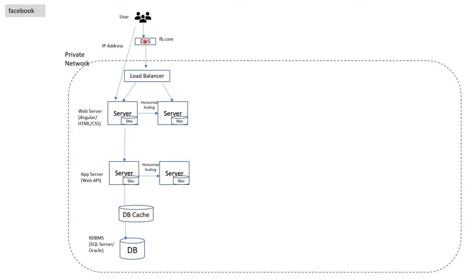The users will not access the site by IP address — they will use a domain name. In this case it is fb.com or facebook.com. For that you will use DNS right here. For a normal application and normal traffic, these settings are enough. But to build for high traffic and a complex application, you need more things.